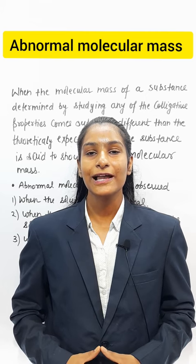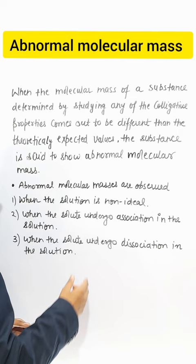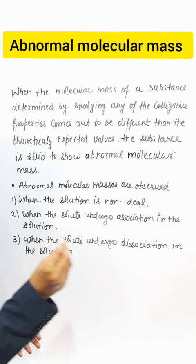In this video, we will know what abnormal molecular mass is. When we determine the molecular mass from the colligative properties, it is different from our theoretical expected value. So we get to see the substance that is showing abnormal molecular mass.